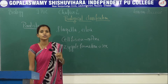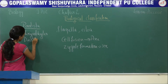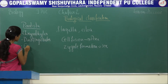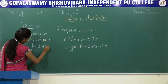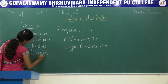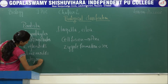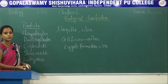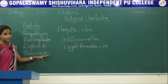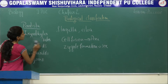Protista is further divided into five different types: chrysophytes, dinoflagellates, euglenoids, slime molds, and protozoans. Now we will be studying about each of them in detail. First, coming to chrysophytes.